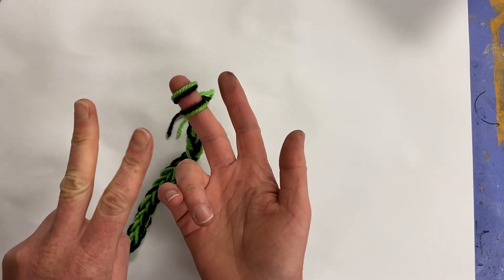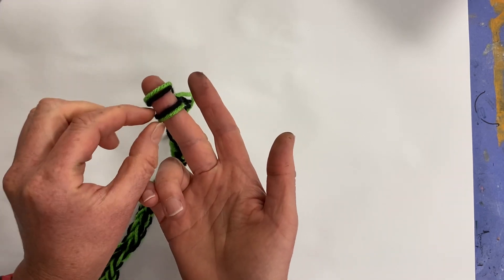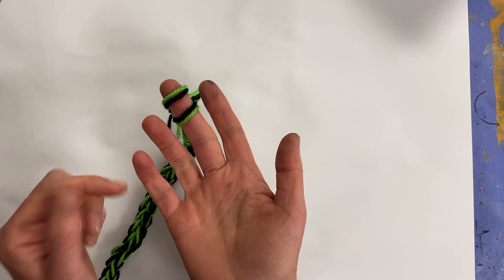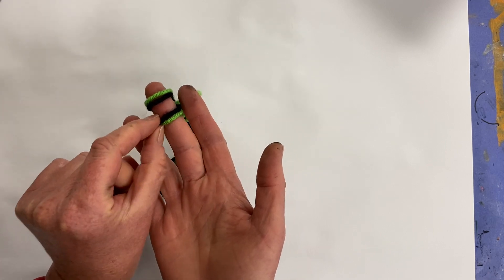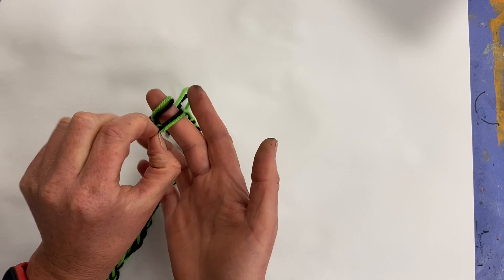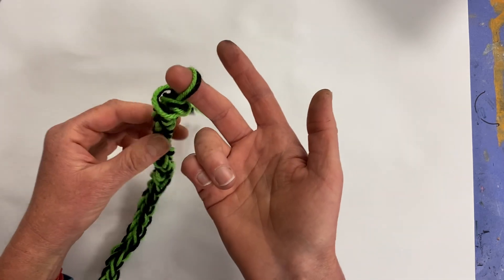And now I have two loops, just like before, two rings. And we remember what to do, don't we? We always take the bottom loop and put it over the top of the other loop. Just like that.